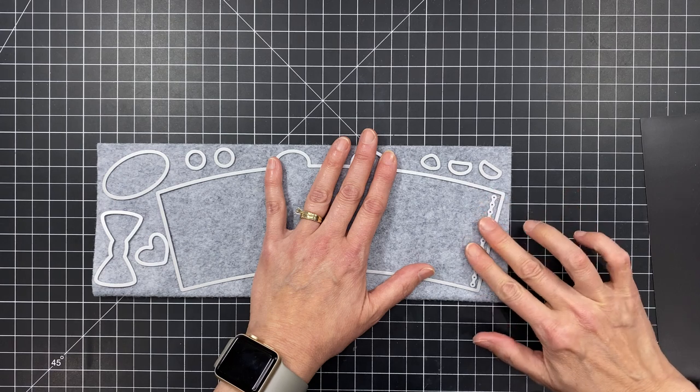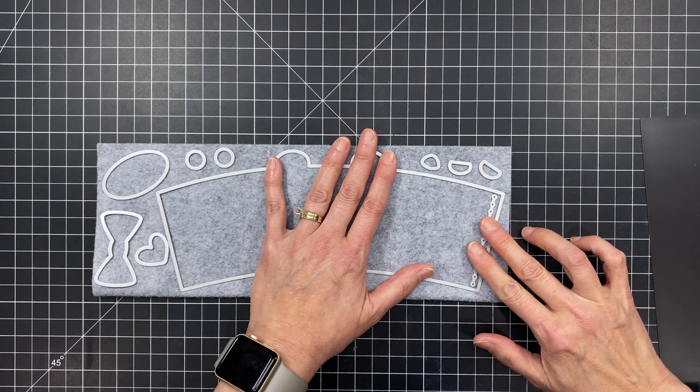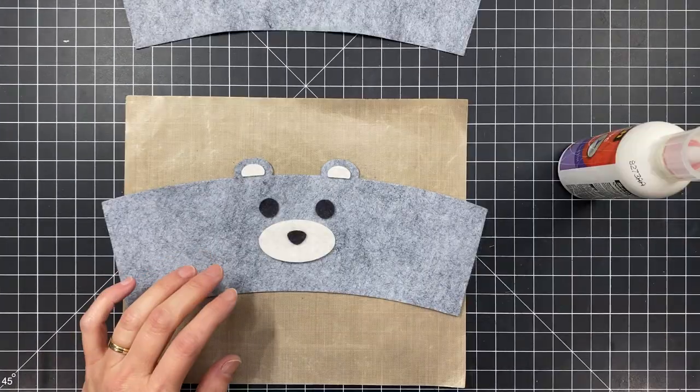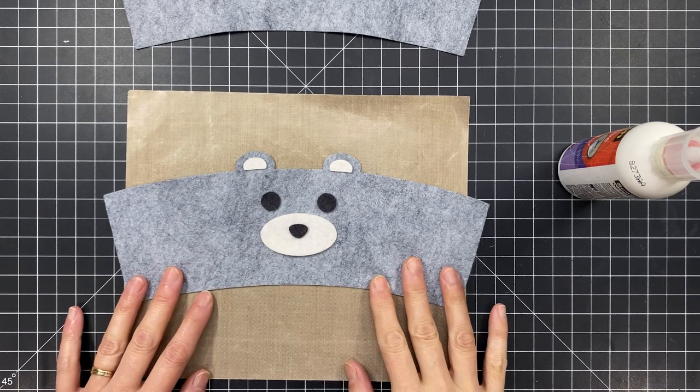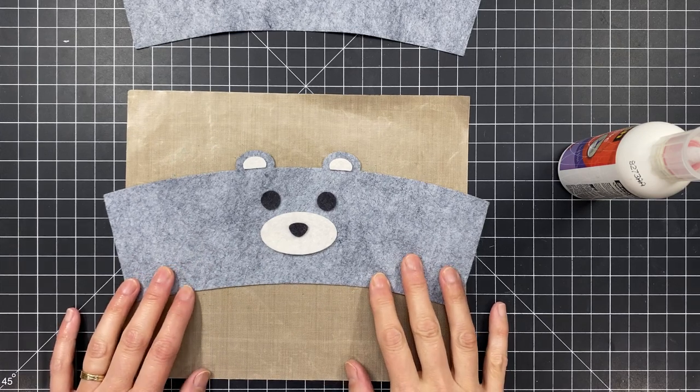And I'm actually going to cut two pieces of felt from the body that wraps around my coffee cup because I like to double layer my felt for my coffee cozies.